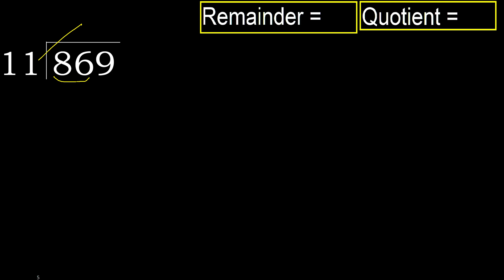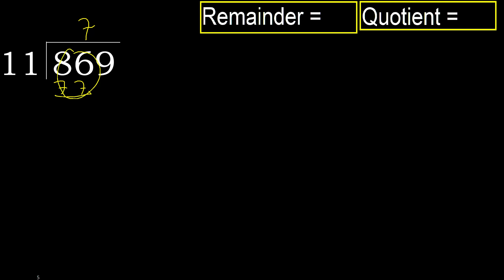11 multiplied by which number is nearest to 86 but not greater? 11 multiplied by 8 is 88, which is greater. Multiplied by 7 is 77, which is not greater. Subtract: 86 minus 77 is 9.